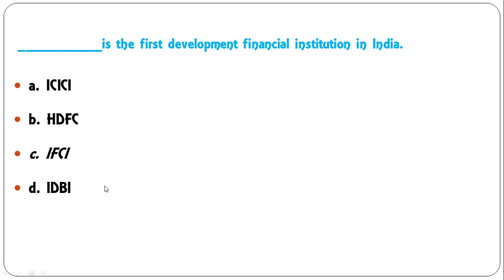Next: Dash is the first development financial institution in India. Options: ICICI, HDFC, IFCI, IDBI. It was IFCI which was first established as a development financial institution in India. So C is the correct answer.